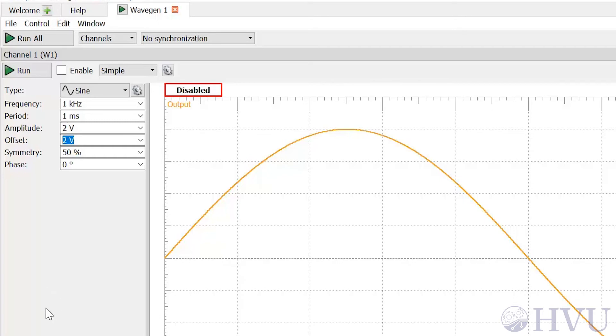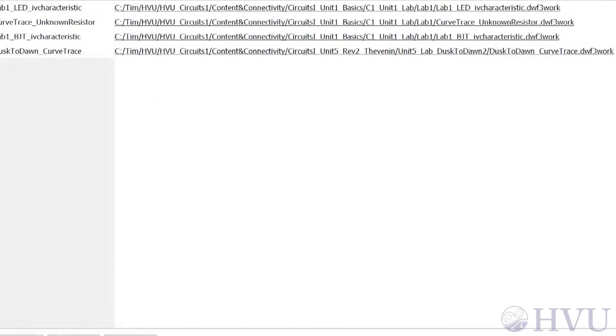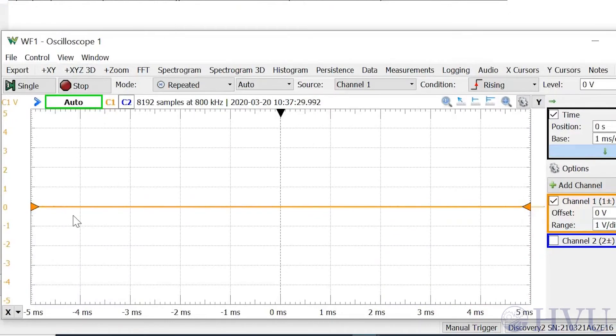I've also connected the waveform generator to my oscilloscope. The scope function shows the wave gen output as a function of time.